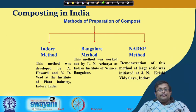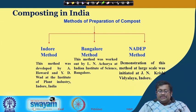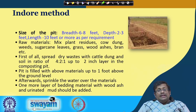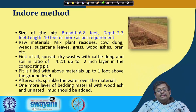The NADEP method was first demonstrated at J.N.K.V. (Jawaharlal Nehru Krishi Vishwavidyalaya) in Indore. These are three important methods of composting in India. In the Indore method, pits are created with a breadth of 6 to 8 feet, depth of 2 to 3 feet, and length of 10 feet or more as per requirement.